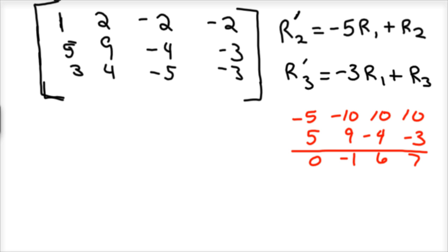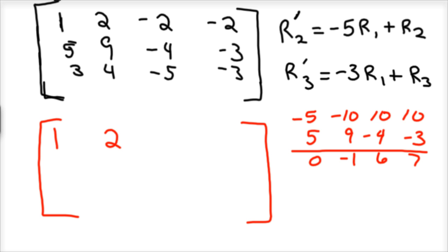So our new matrix: we're going to leave our top row alone — 1, 2, negative 2, negative 2. Our middle row, row 2, is now 0, negative 1, 6, and 7.